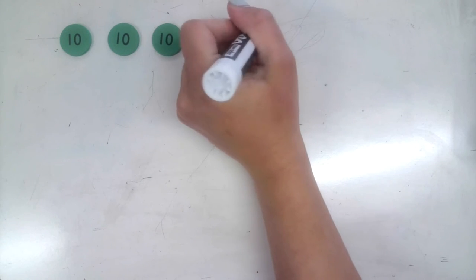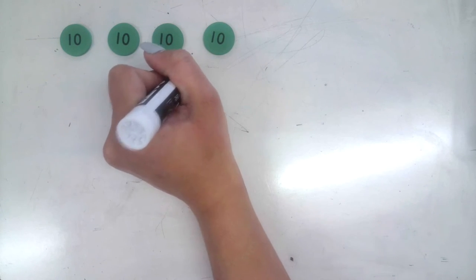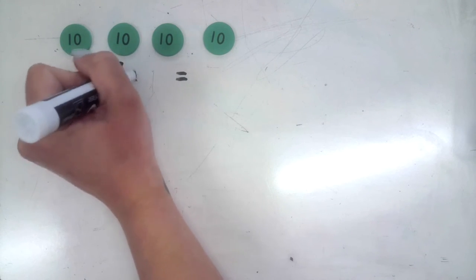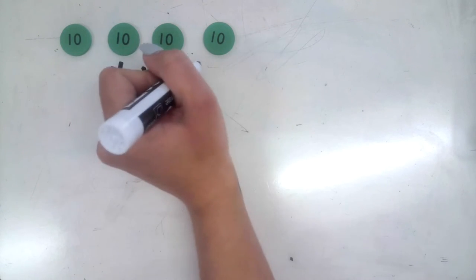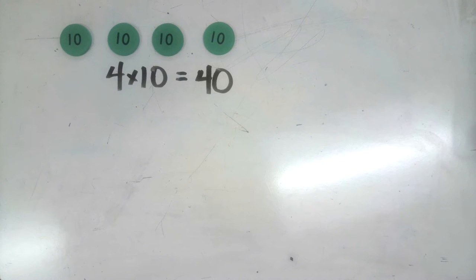Four tens written as a multiplication expression is 4 times 10 equals 40. Okay, so when I'm thinking, well there's 40 here, that's probably the first thing you said and you are correct. But when I want to make a multiplication expression to show that, I'm going to say 4 times 10.